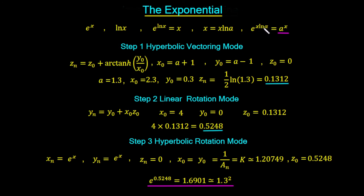In step 1 we work out the natural log of a. We set x₀ = a + 1 = 2.3, y₀ = a − 1 = 0.3, and z₀ = 0. This should give us one half of the natural log of 1.3, which is 0.1312 — that's the value we expect from the output of the first stage.